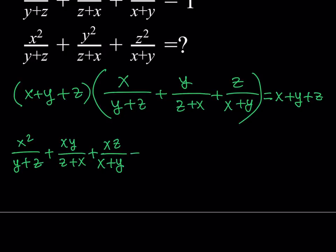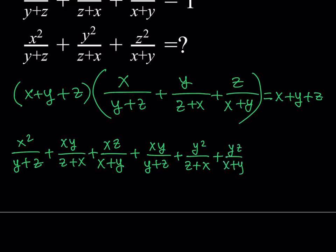Now distributing y: you get x times y over (y plus z), then y squared over (z plus x) — which is again something we're looking for — plus y times z over (x plus y). So this is the expression so far. Then one more time we'll do this, and the whole thing equals x plus y plus z. It won't fit on the screen all at once, but we'll handle that.